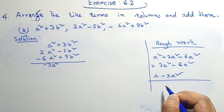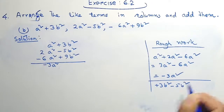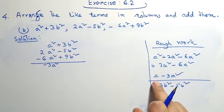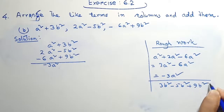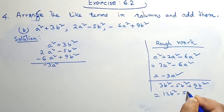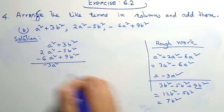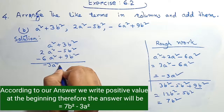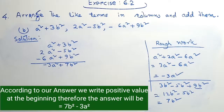Again we need to find the value of b. Therefore plus 3b² minus 5b² plus 9b². 3b² plus 9b² equals 12b² minus 5b². The value of b² equals 7b². Therefore the b² value is positive — plus 7b². Question C.